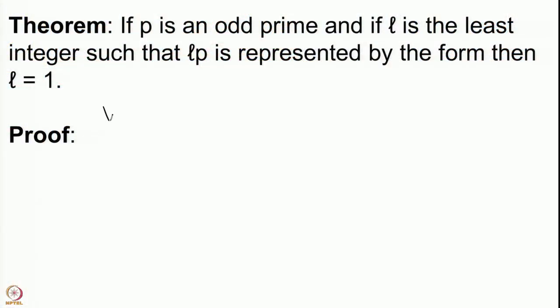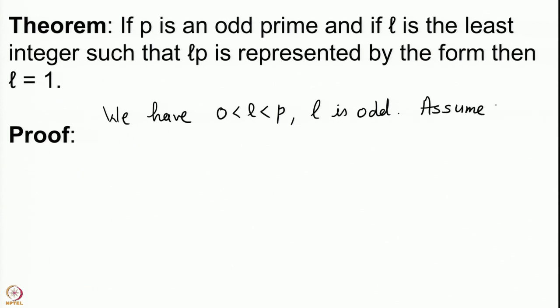We have already noted that l is odd and l < p. These are two very important results that we have obtained and they are going to be used. Now consider — assume that l > 1. I must recall for you one concept introduced some lectures back: the concept of a numerically least residue.